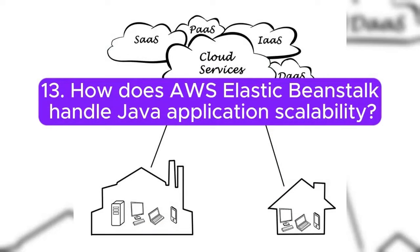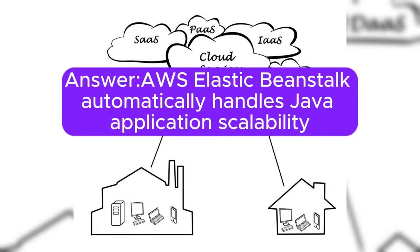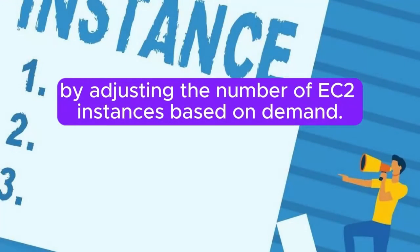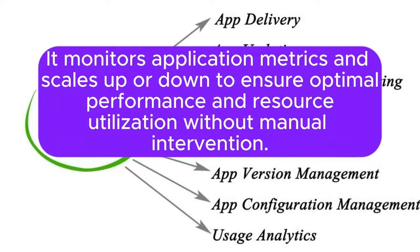Question 13: How does AWS Elastic Beanstalk handle Java application scalability? AWS Elastic Beanstalk automatically handles Java application scalability by adjusting the number of EC2 instances based on demand. It monitors application metrics and scales up or down to ensure optimal performance and resource utilization without manual intervention.